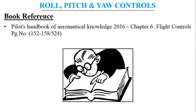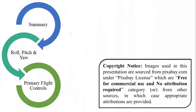I recommend going through the Pilot's Handbook of Aeronautical Knowledge, which is free to download from the FAA — Federal Aviation Administration's — website. It provides a deep perspective from the pilot's point of view, useful for further derivations. The relevant chapter is Chapter 6, Flight Controls, pages 152 to 158. That's it for this session — we covered roll, pitch, yaw and the primary flight controls. Thank you.